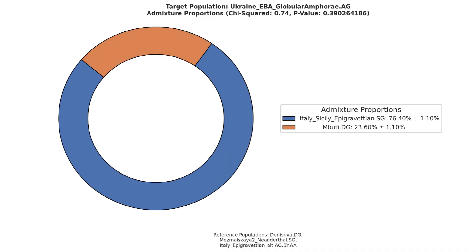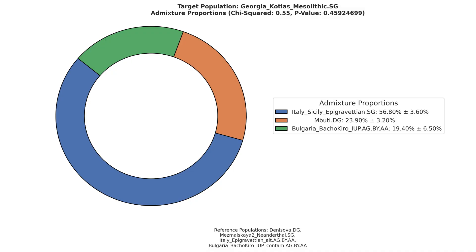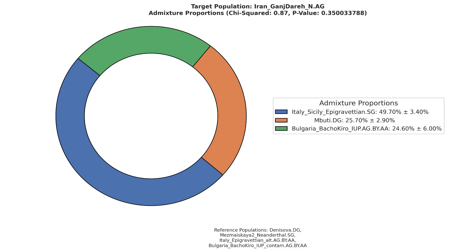Next, the Globular Amphora culture carries about 23.6% Basal Eurasian admixture. The Caucasian hunter-gatherers carry around 24% Basal Eurasian admixture and 19% East Eurasian admixture. Moving on to the Iranian Neolithic farmers, they carry around 25.7% Basal Eurasian admixture.